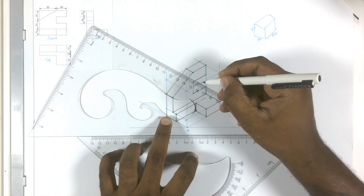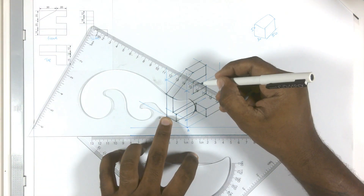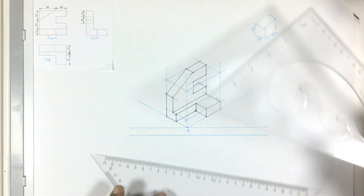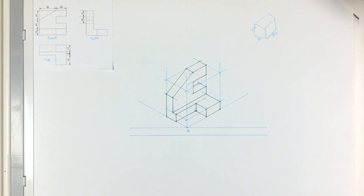There you have it — we have now completed this exercise in isometric projection. You don't need to erase any of the construction lines. Thank you for watching and see you next time.